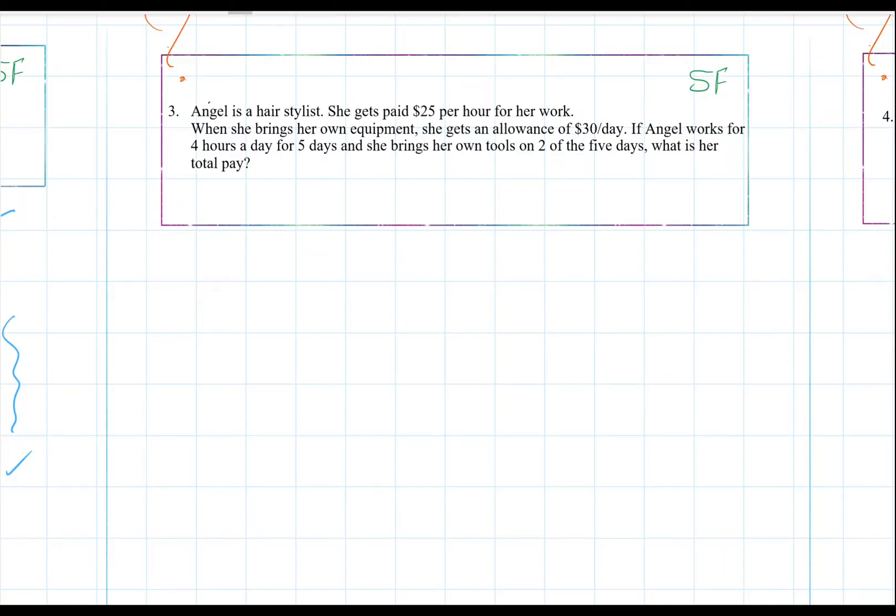Let's look at another question. Angel is a hairstylist. She gets paid $25 per hour for her work. When she brings her own equipment, she gets an allowance of $30 a day. If Angel works for 4 hours a day for 5 days, and she brings her own tools on 2 of the 5 days, what is her total pay?